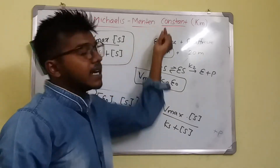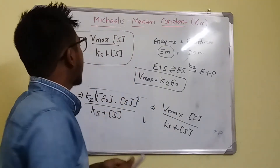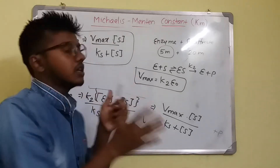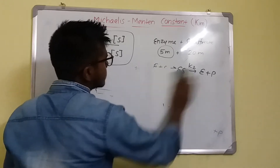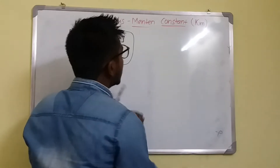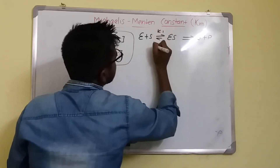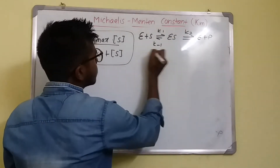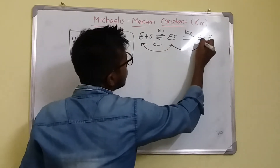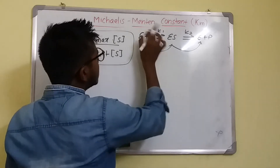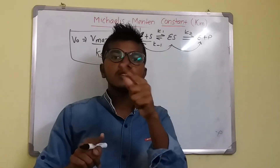This equation is the Michaelis-Menten equation. It signifies the velocity of any reaction at any instant. Now, Briggs and Haldane gave a modification to the Michaelis-Menten constant. In the original formulation, the ES complex either goes backward to E and S or forward to E plus P. But Michaelis only considered the backward direction. Briggs and Haldane commented that ES can go either in the backward direction or in the forward direction.